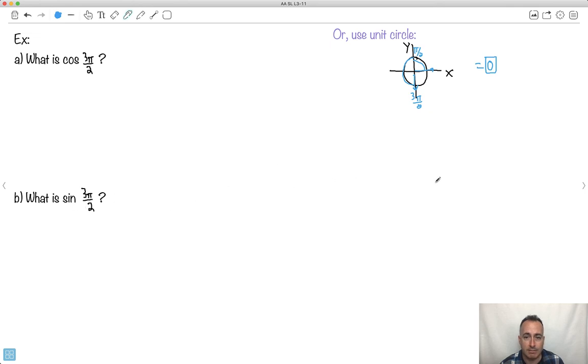And the sine, just to show how I would do it, I would use the same diagram, in fact, but the sine is the y value. It says it's down here. It's minus 1. Remember that from the other video I showed you. Okay? So this value right here, because the sine is the y value.